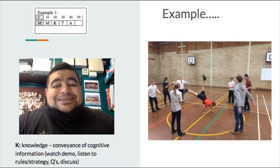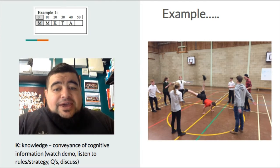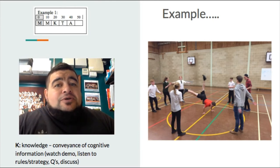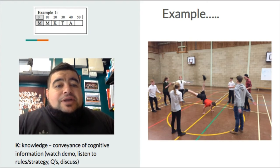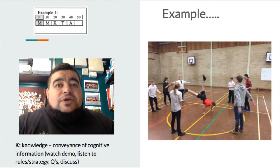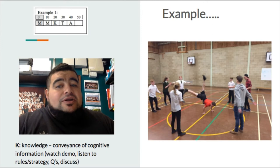The next one is K, and K is knowledge — the conveyance of cognitive information. This could be a demonstration, listening to rules or strategies of a game, asking questions to clarify understanding, or discussing things. In the example on the side, you can see the teacher is demonstrating a windmill move in breakdancing, and the students are around observing and taking on board that demonstration. That only goes for 10 seconds.